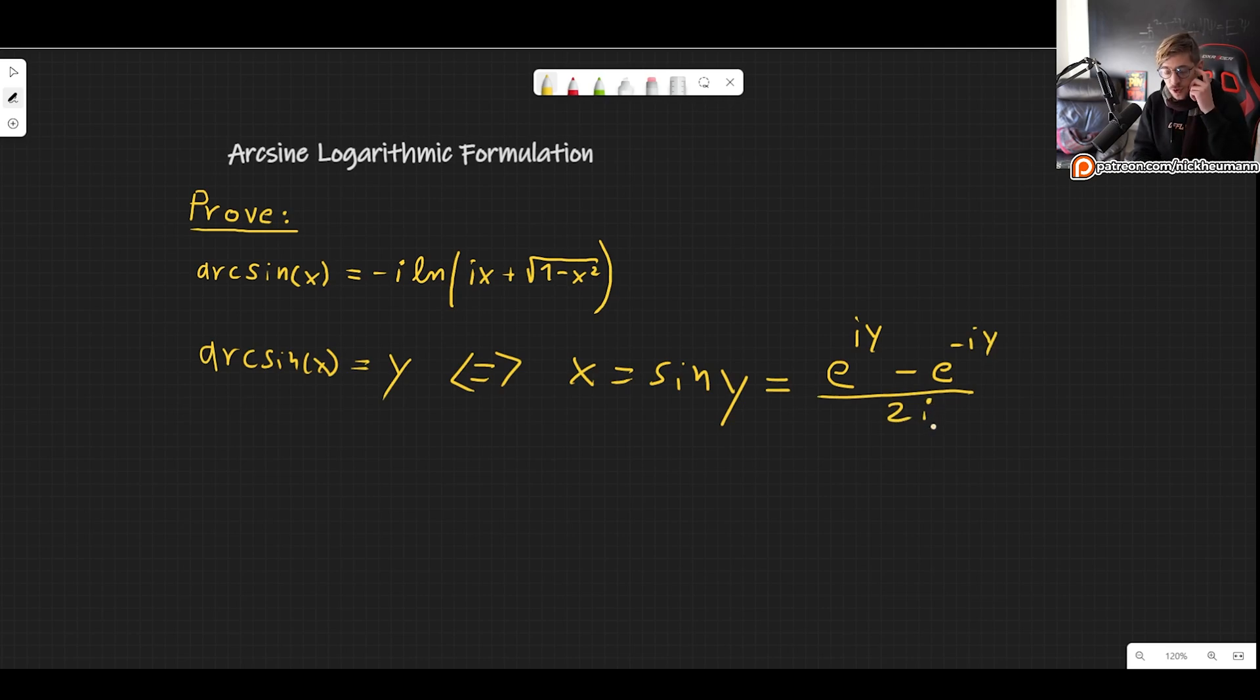Due to Euler's formulas. So we now get that this is equal to x. So from here, let's isolate our exponentials. So e to the iy minus e to the minus iy, this is equal to 2ix.